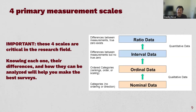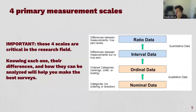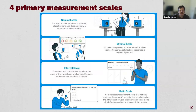Interval and ratio data are quantitative, so you can compute averages, means, medians, modes, correlations, factor analysis, clustering, and regression. You can really dig into these data types with advanced statistics. In contrast, nominal and ordinal data are more limited — you can count and look at percentages, but advanced analytics are restricted.